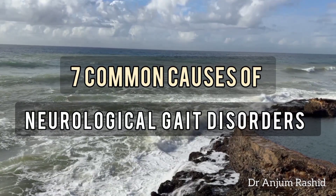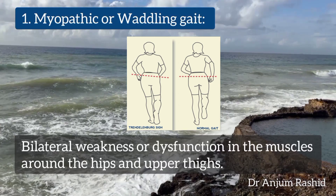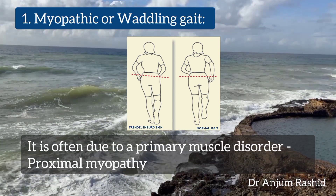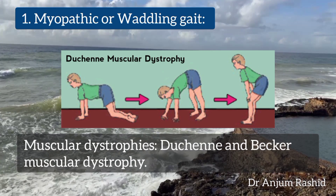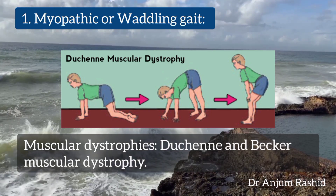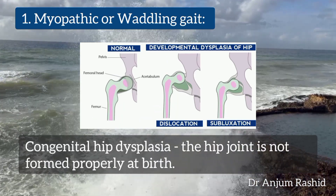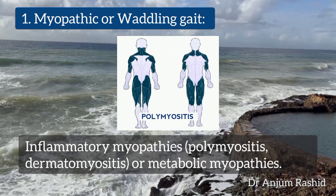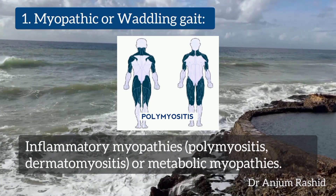This video is about important common causes of neurological gait disorders. Number one: myopathic or waddling gait. It is due to bilateral weakness or dysfunction in the muscles around the hips and upper thighs. It is often due to a primary muscle disorder — proximal myopathy. Conditions associated with myopathic gait include muscular dystrophies such as Duchenne and Becker muscular dystrophy, spinal muscular atrophy, congenital hip dysplasia, and inflammatory myopathies such as polymyositis or dermatomyositis and metabolic myopathies.